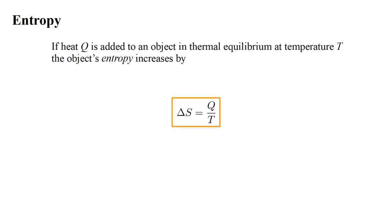Based on our analysis of the Carnot and Stirling cycles, we will join him in making the following statement. If heat q is added to an object in thermal equilibrium at temperature T, the object's entropy increases by delta s equals q over T.